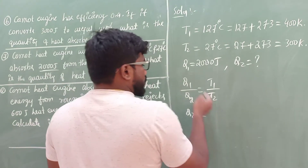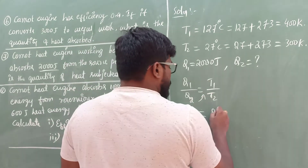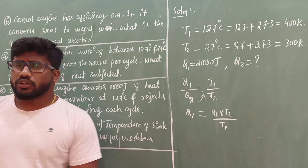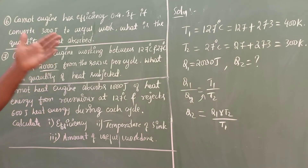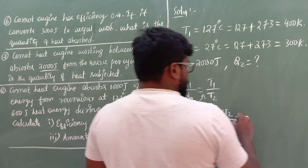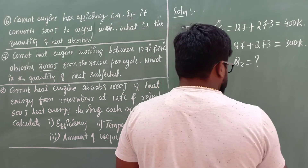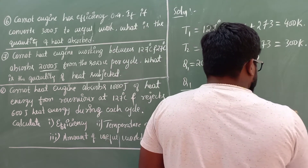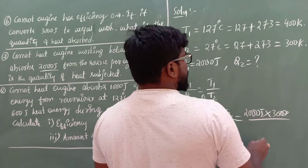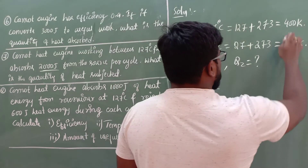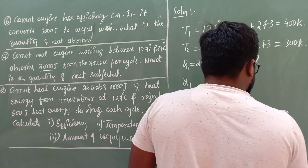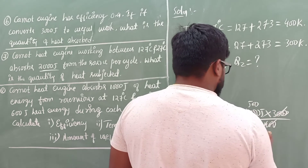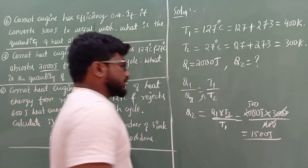Cross-multiplying, Q2 equals Q1 multiplied by T2 divided by T1. Substituting: Q1 is 2000 Joules, T2 is 300 Kelvin, T1 is 400 Kelvin. Cancelling the zeros: 2000 times 300 divided by 400 gives 500 times 3, which equals 1500 Joules.